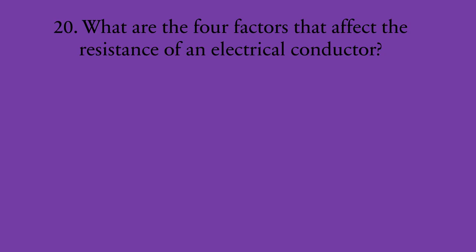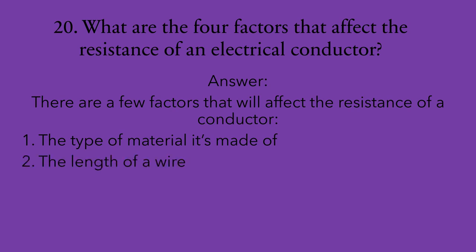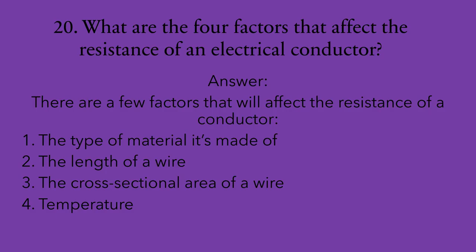Number twenty: what are the four factors that affect the resistance of an electrical conductor? The first one is the type of material it's made out of — different materials have different amounts of free-flowing electrons, and this is the most important factor. The second is the length of wire — resistance is directly proportional to length. The third is the cross-sectional area — resistance is inversely proportionate, so the thicker the wire, the lower the resistance. The final one is temperature — generally, as temperature increases, resistance also increases, with a few exceptions like carbon.